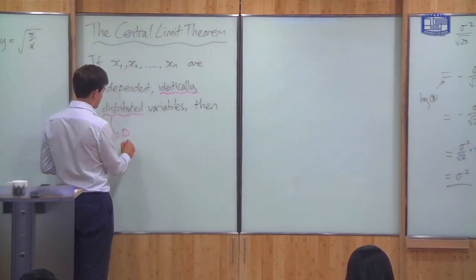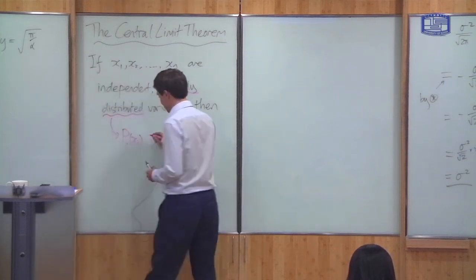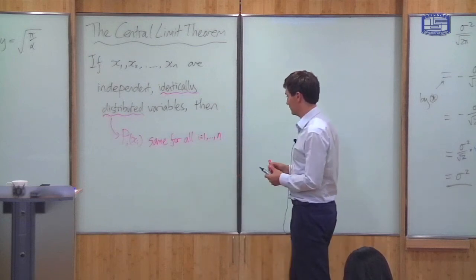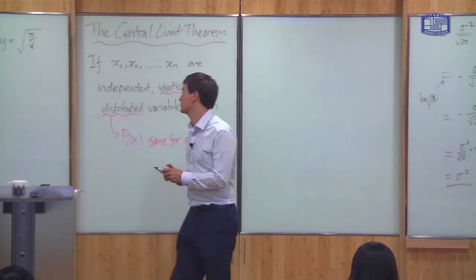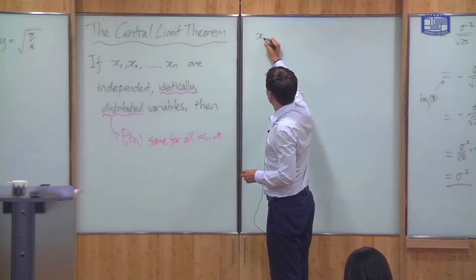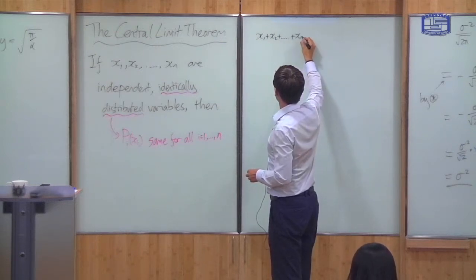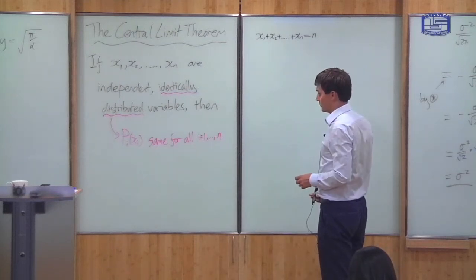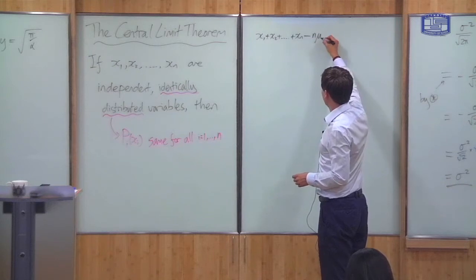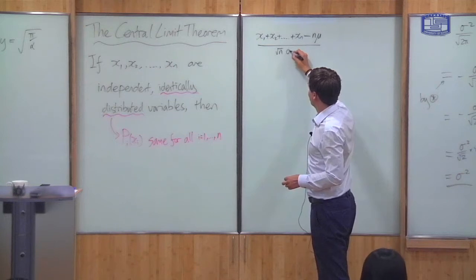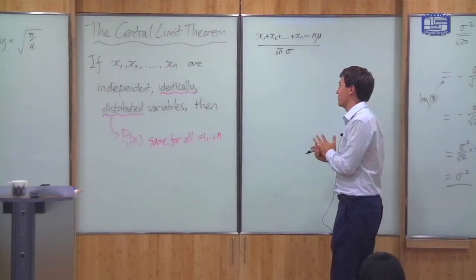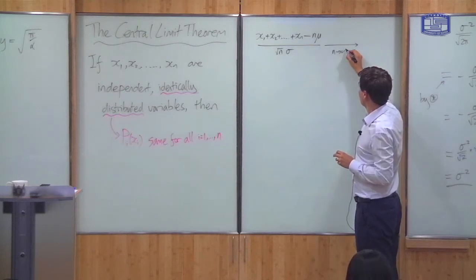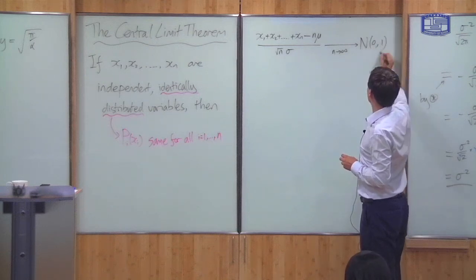Identically distributed means that p(xi) is the same for all i — they have the same probability distribution. If this is true, then the distribution of the sum, minus n times the mean, divided by the square root of n times the standard deviation, goes, as n goes to infinity, to a normal distribution with mean 0 and variance 1.